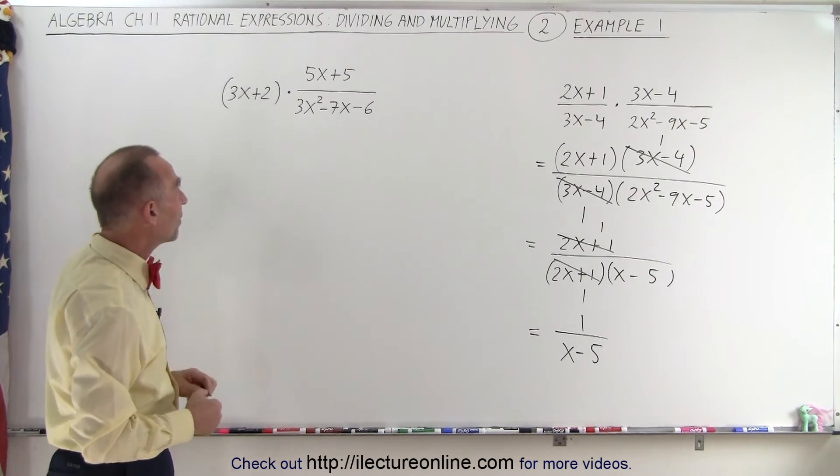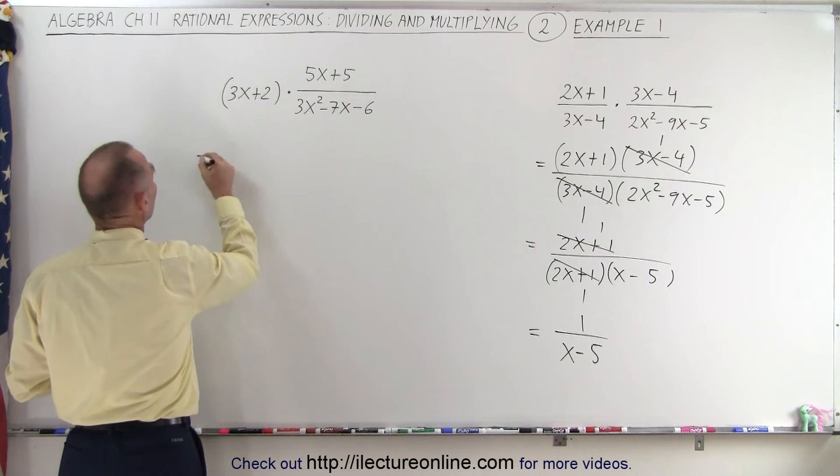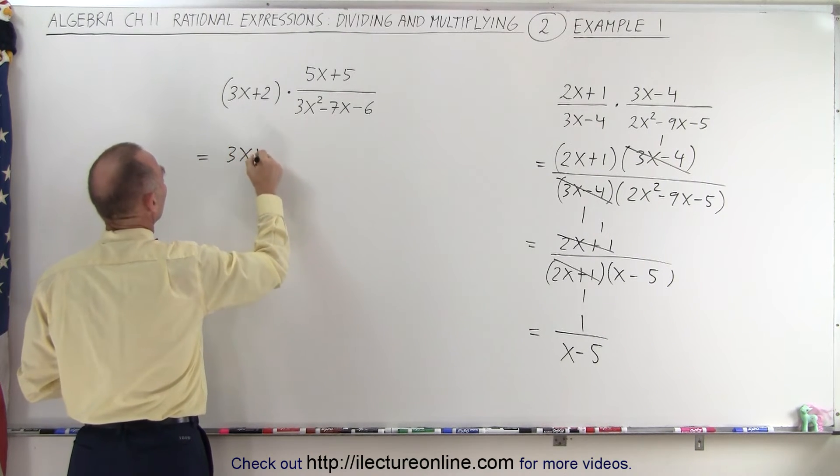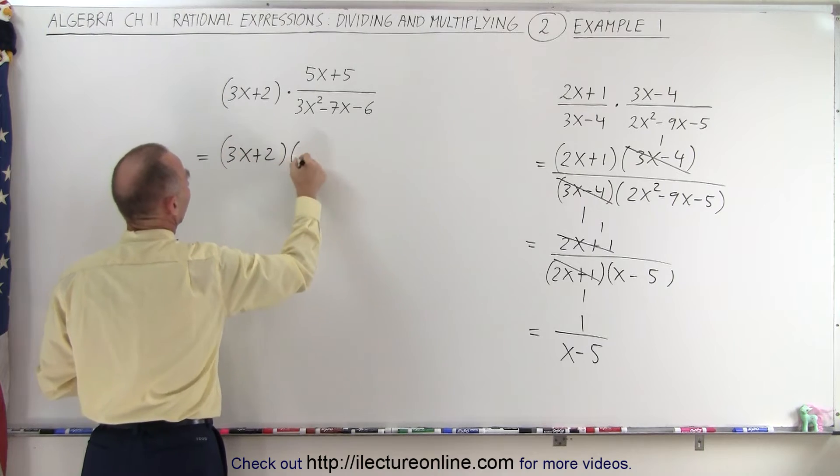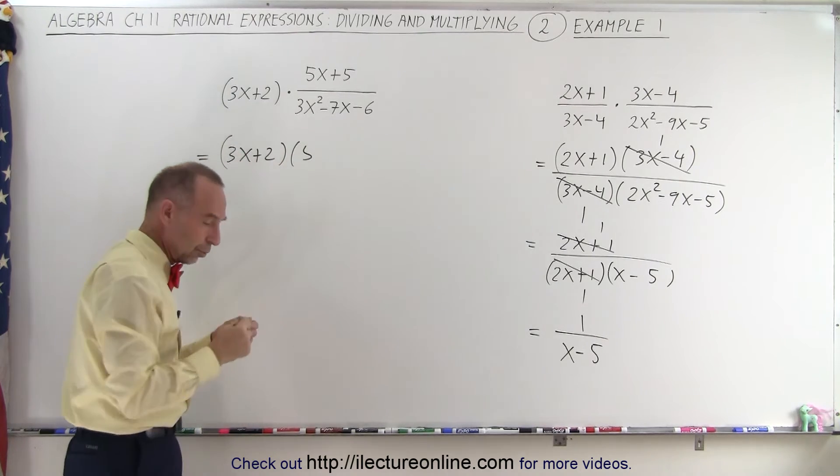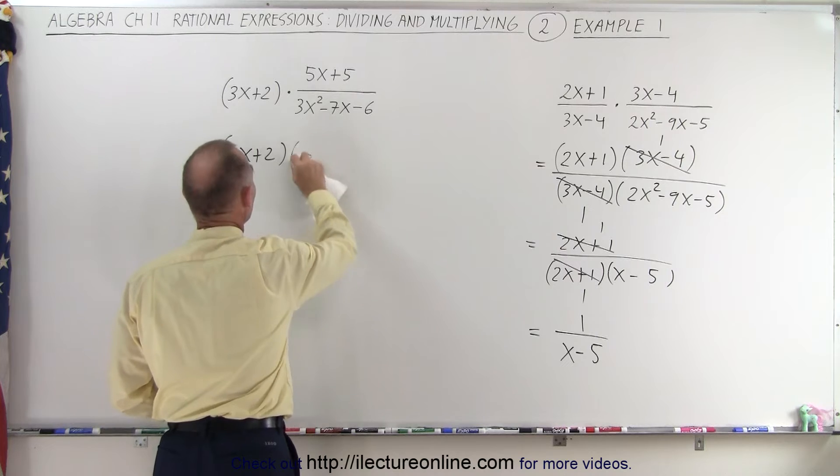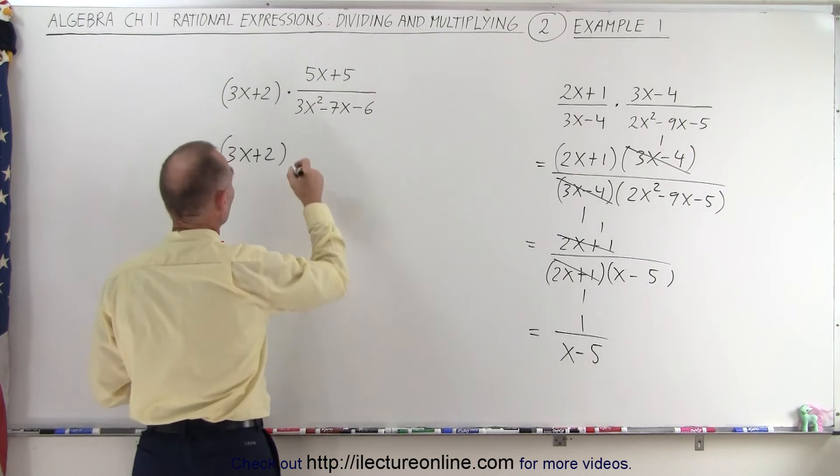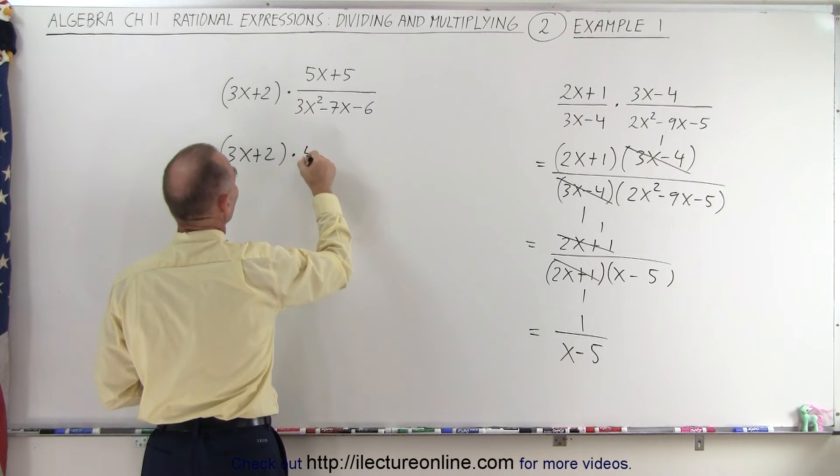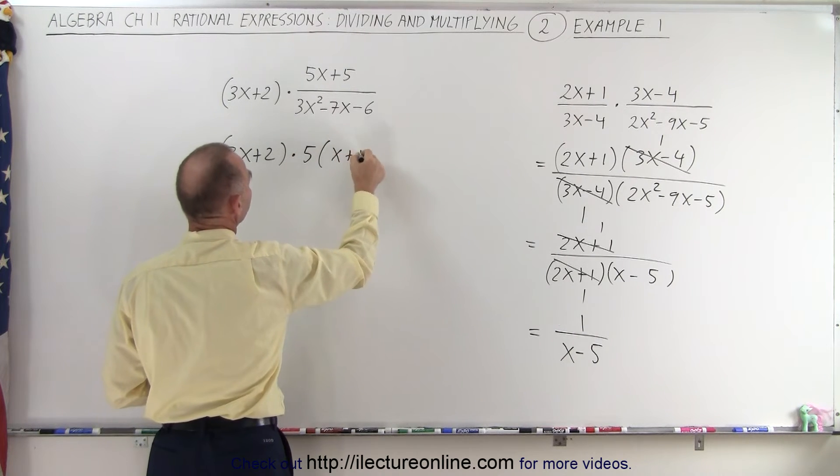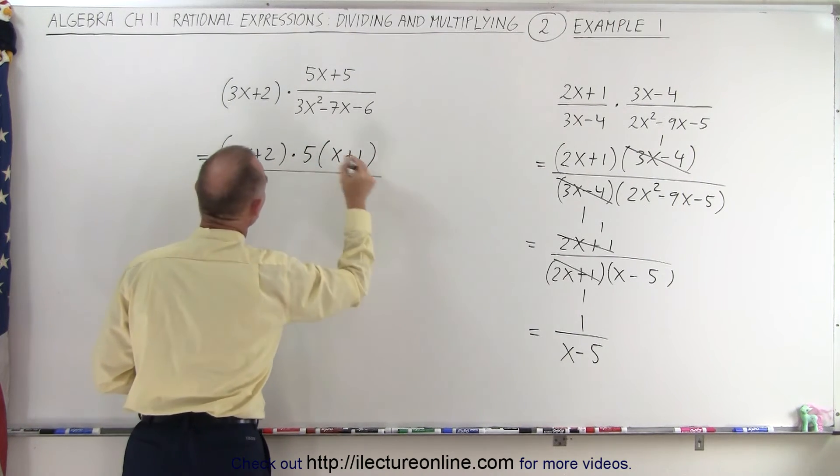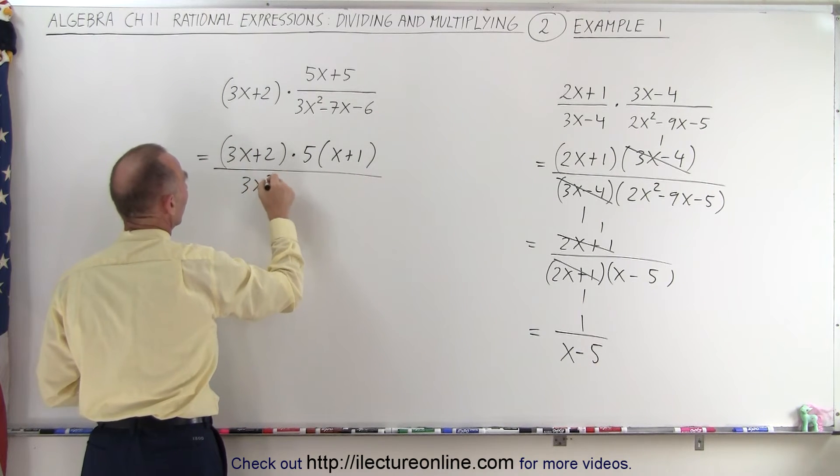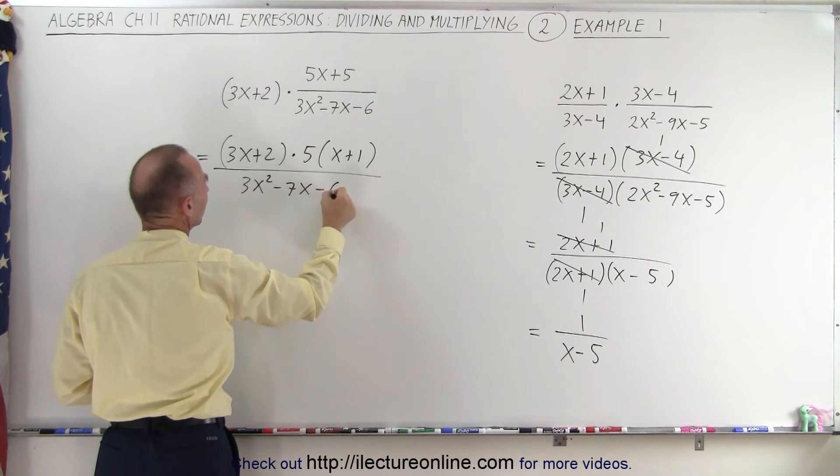So here, again, the same thing. We can write this as, in the numerator, 3x plus 2 multiplied times 5x. What I can do here is, I can think ahead a little bit. Notice that I can factor out a 5 out of those two terms, so this can be written as times 5 times x plus 1. And in the denominator, we'll end up with 3x squared minus 7x minus 6.